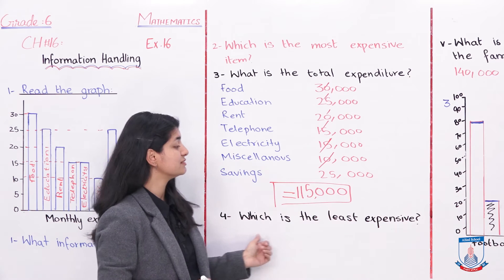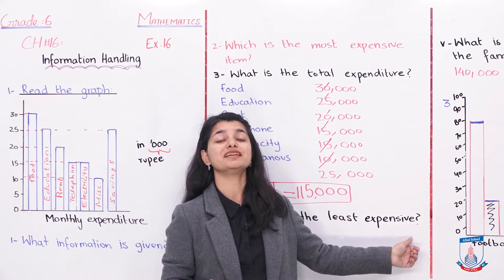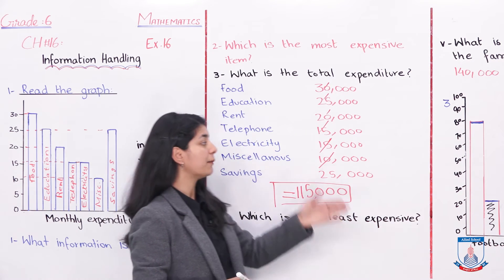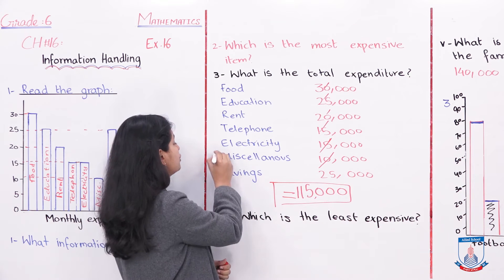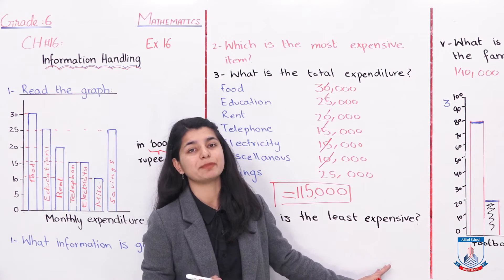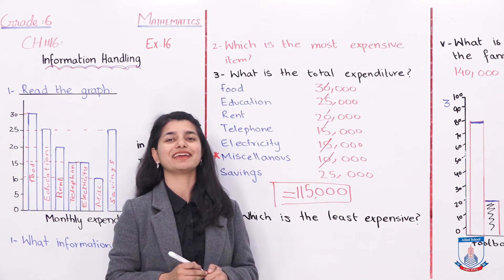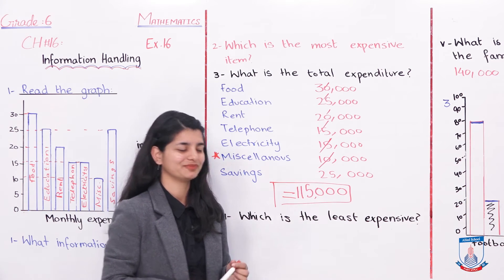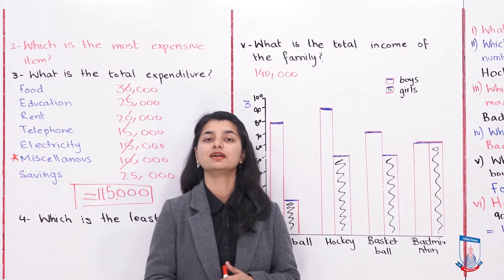Then, your next question is: which is the least expensive? What was the least expensive? You can see here that miscellaneous expenses are the cheapest. So here you can write miscellaneous expenses. One more part is questioned.